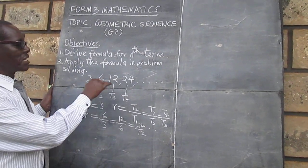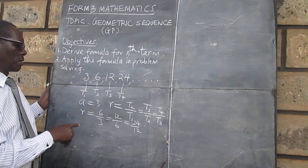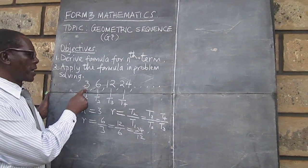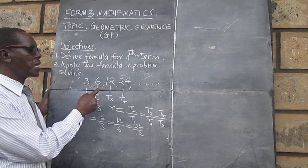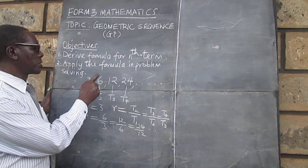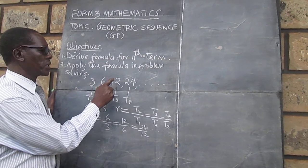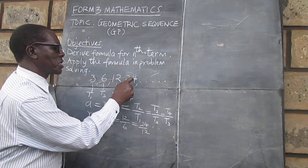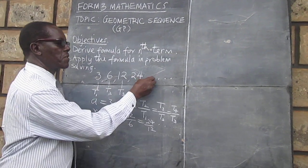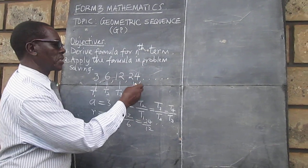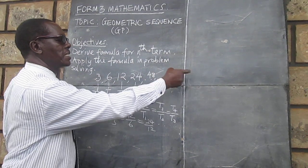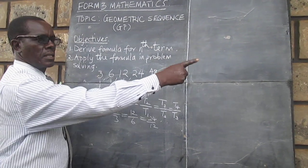Here, you can look at it in another way. To get the second term from the first, we are doubling. You double 3, you get 6. You double 6, you get 12. You double 12, you get 24. And therefore, we can easily get the fifth term — it is going to be 48, and then 96, and so on.